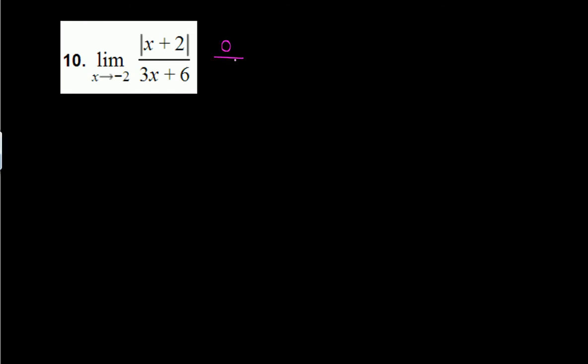Plug in x equals negative 2: negative 2 plus 2 is 0, absolute value of 0 is 0 over 3 times negative 2, which is negative 6 plus 6, also 0. So we get 0 over 0 — indeterminate form.